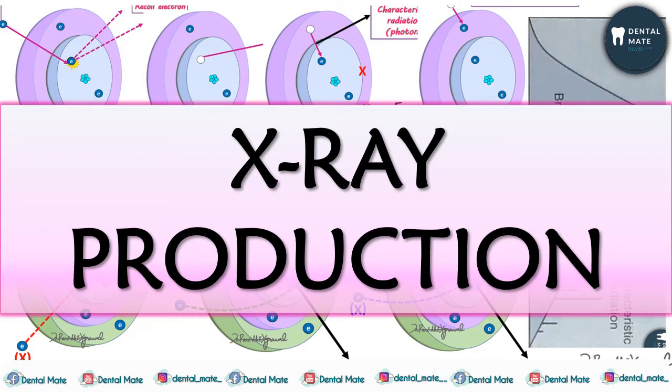Hello everyone, welcome back to my YouTube channel. Today in this video we'll be discussing how X-rays are produced. We'll be talking about two types of radiations: characteristic radiation and Bremsstrahlung radiation, how they are produced and which is the more efficient one. Let's get started.